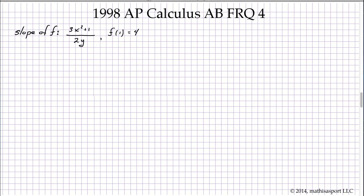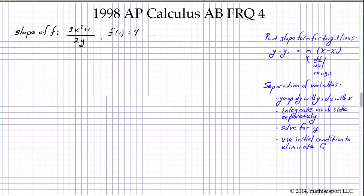We begin with information about the slope of a function, as well as an initial condition. What we're going to find useful for the various parts of this question will be the point-slope form for tangent lines and the method of separation of variables.